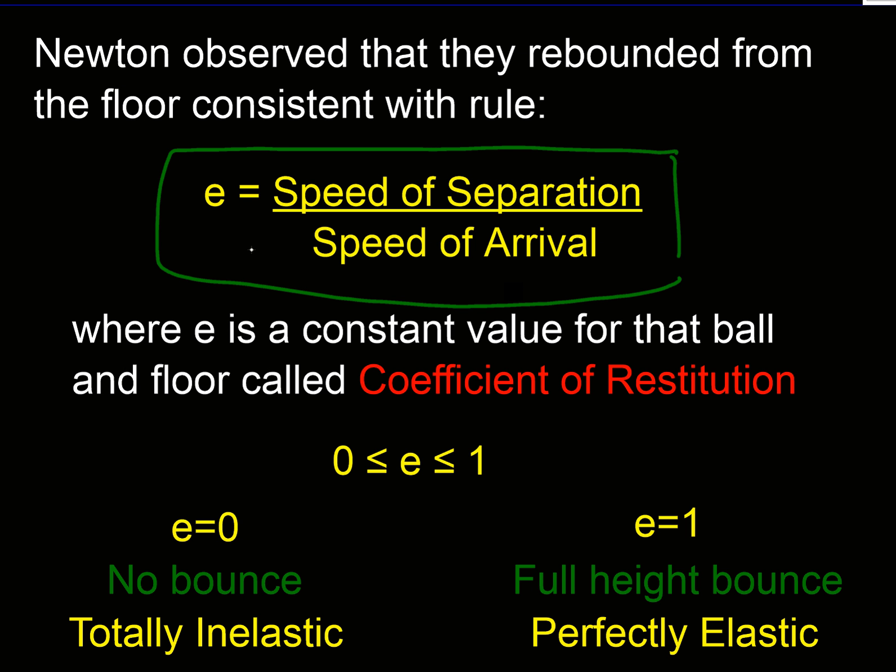What he found was that if he had his ball and he dropped it from any height or threw it in at any speed, if he got his speed of arrival here, U, and he calculated his speed of separation, V, so this is V over U in algebra, that if he divided V by U, he got a constant value for a particular ball and a particular ground.